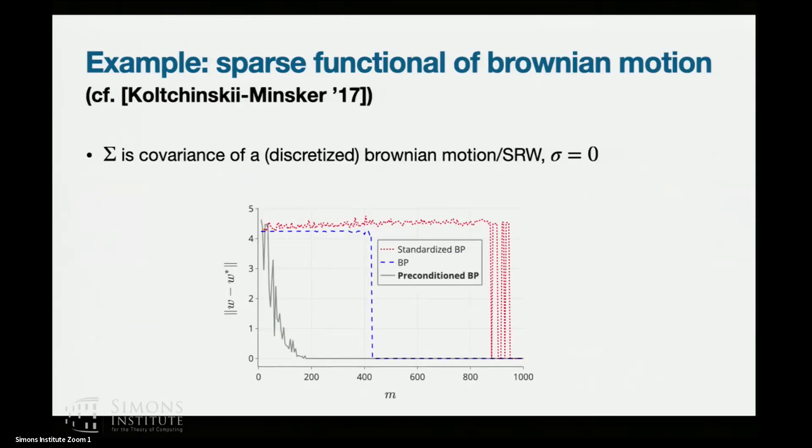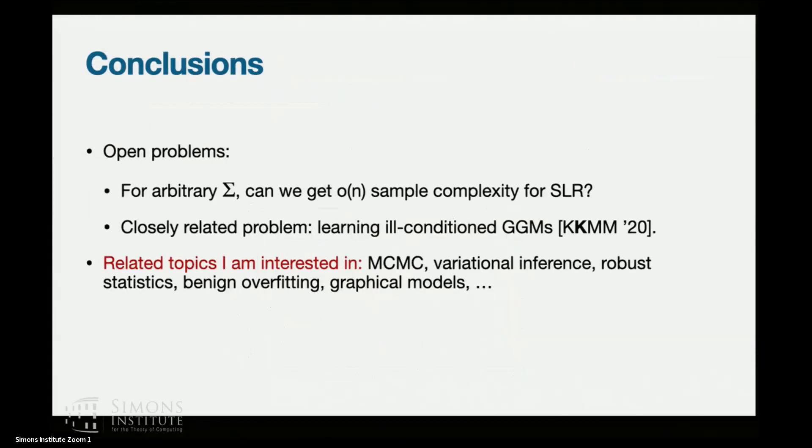And just as an example, Koltchinskii and Minsker studied the case where sigma basically comes from a simple random walk. They studied the performance of LASSO for this problem, which depending on how exactly you do it, it's either the blue or red line. And it's just an example, if you precondition, you'll do way, way better. And you can prove that LASSO requires, basically, LASSO requires square dimension samples. And if you precondition, you only require information theoretic, like log d samples. So it's something you can easily see in experiments.